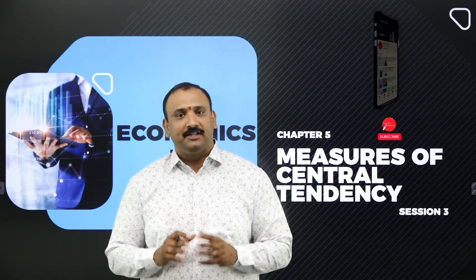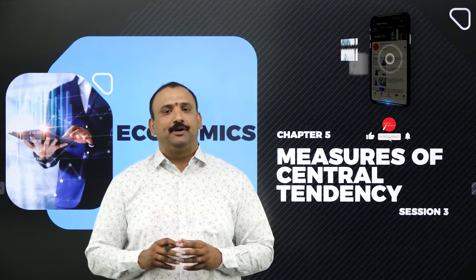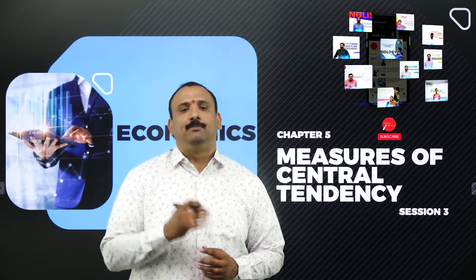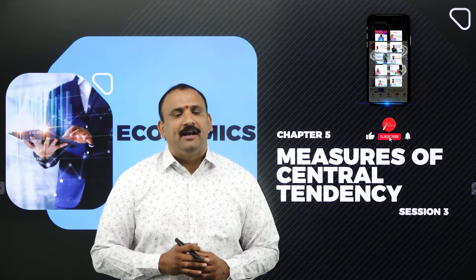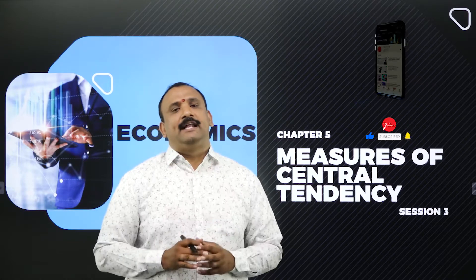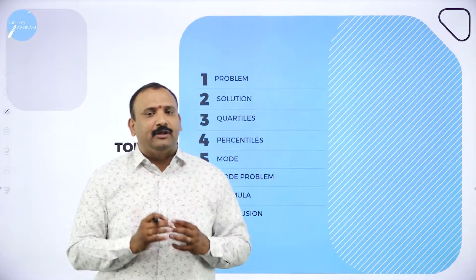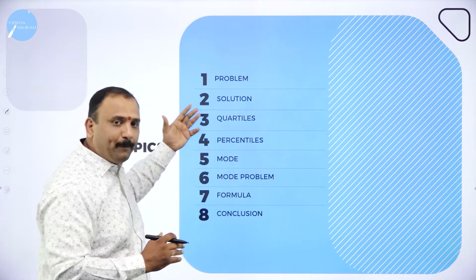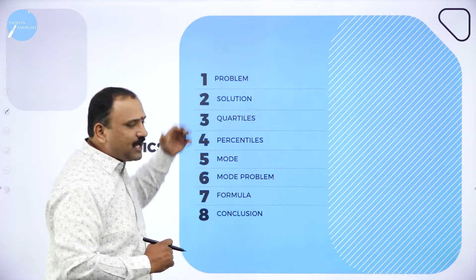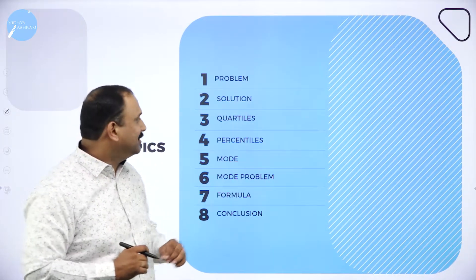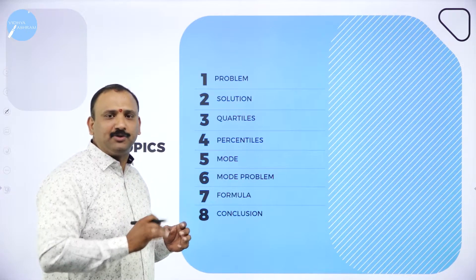Good morning and welcome to my third session. Chapter 5: Measurement of Central Tendency — this is a very important chapter. We have been looking into the different statistical tools that we have been applying in order to arrive at meaningful answers and meaningful analysis of data. Going forward, let's have a look at the topics we are going to cover today. We want to start right away with a problem.